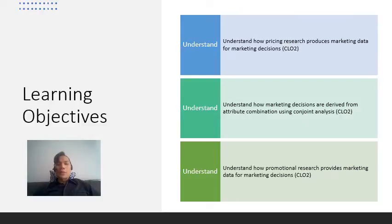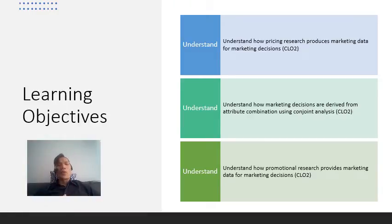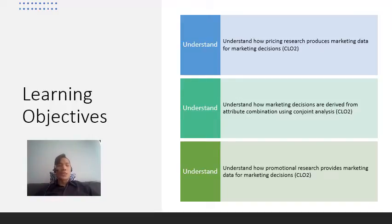For this particular lecture, we want to first understand how pricing research produces marketing data for marketing decisions, and how marketing decisions are derived from attribute combination using conjoint analysis, and also how promotional research provides marketing data for marketing decisions.